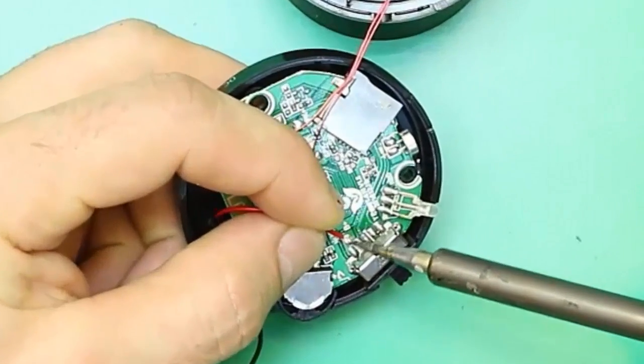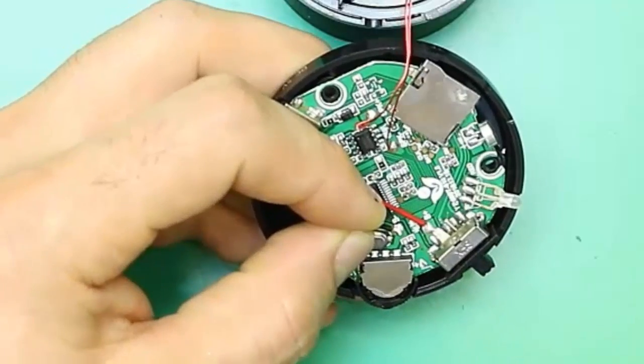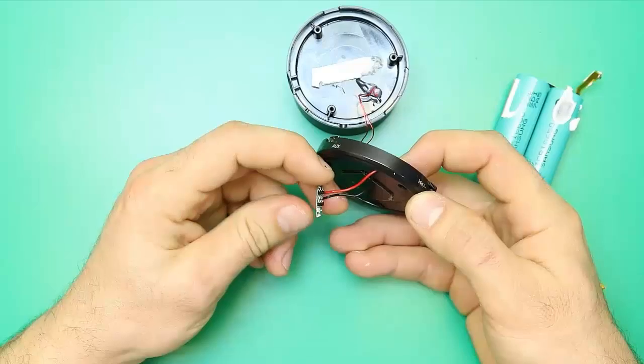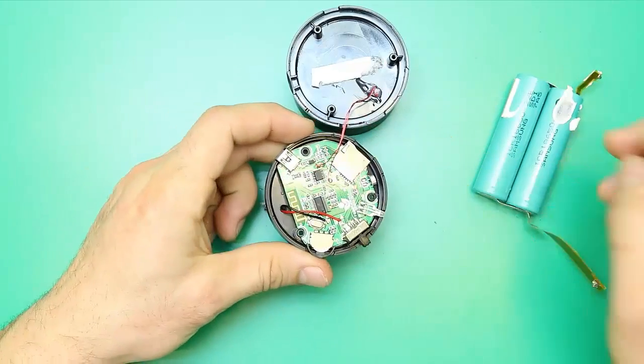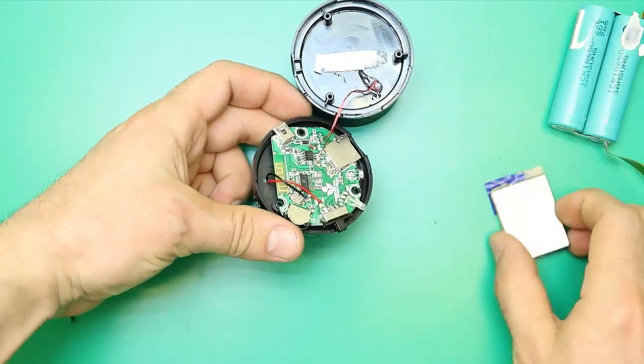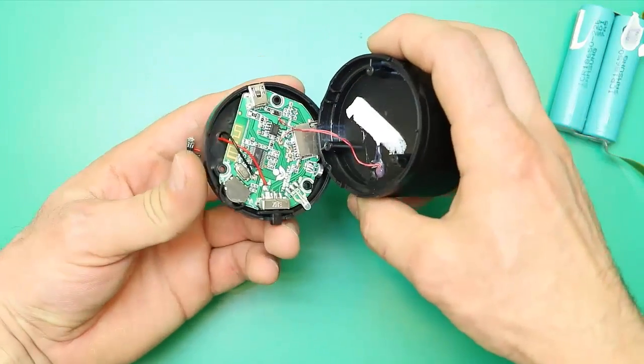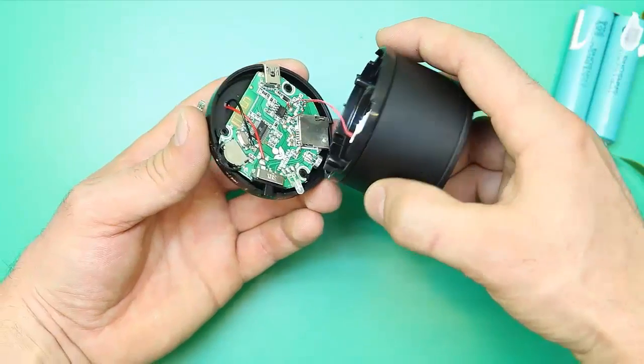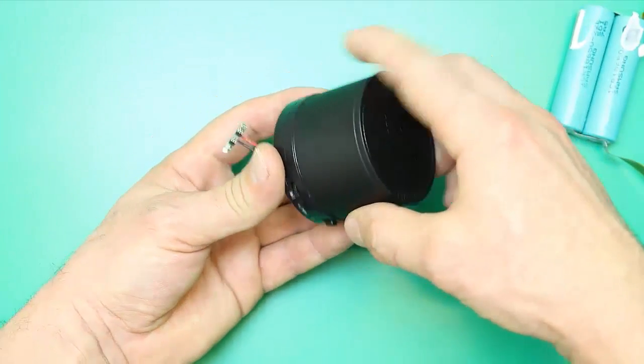We will connect the red wire to the plus and the black wire to the minus. Put the cover on and screw the screws.